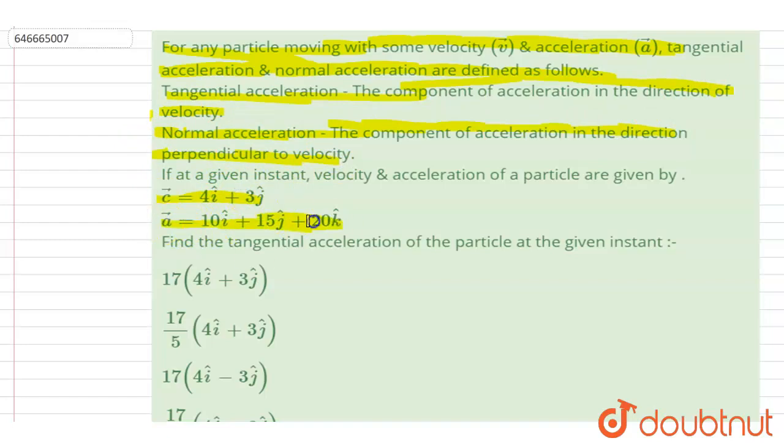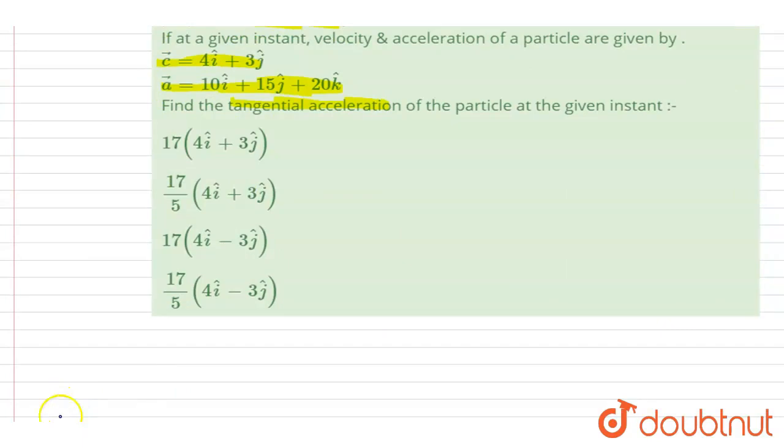So if you see here, the velocity vector and the acceleration vector are given at any instant. You have to find out the tangential acceleration. As already said in the question, the tangential acceleration is the component along the velocity.